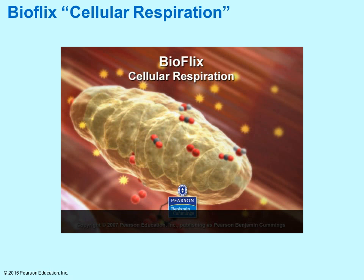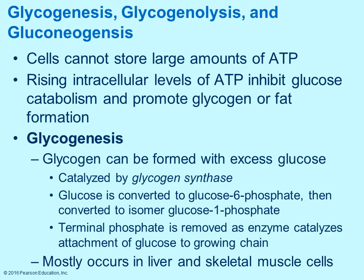There is an excellent video on cellular respiration available free on YouTube that goes through it step by step — very helpful if you're a visual learner. Cells can't store large amounts of ATP, so as ATP levels rise, it will inhibit the breakdown of glucose because you don't need more ATP. Instead, it promotes storing the glucose as either glycogen or fat — and that's exactly what happens. Glycogen is formed when there are excess amounts of glucose.